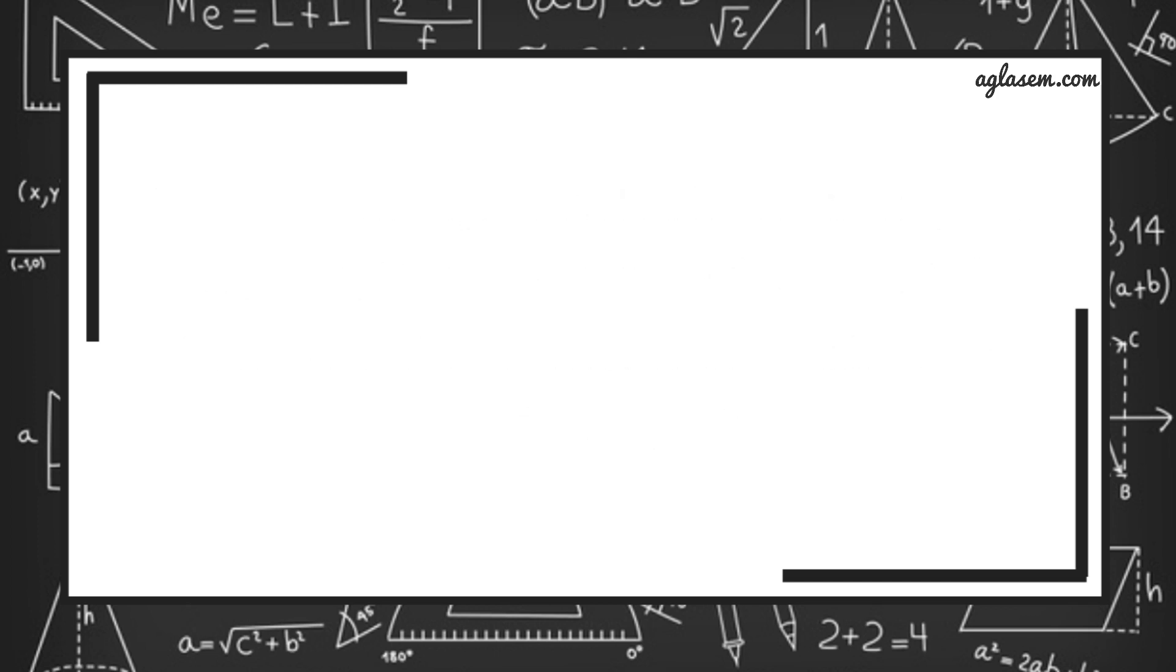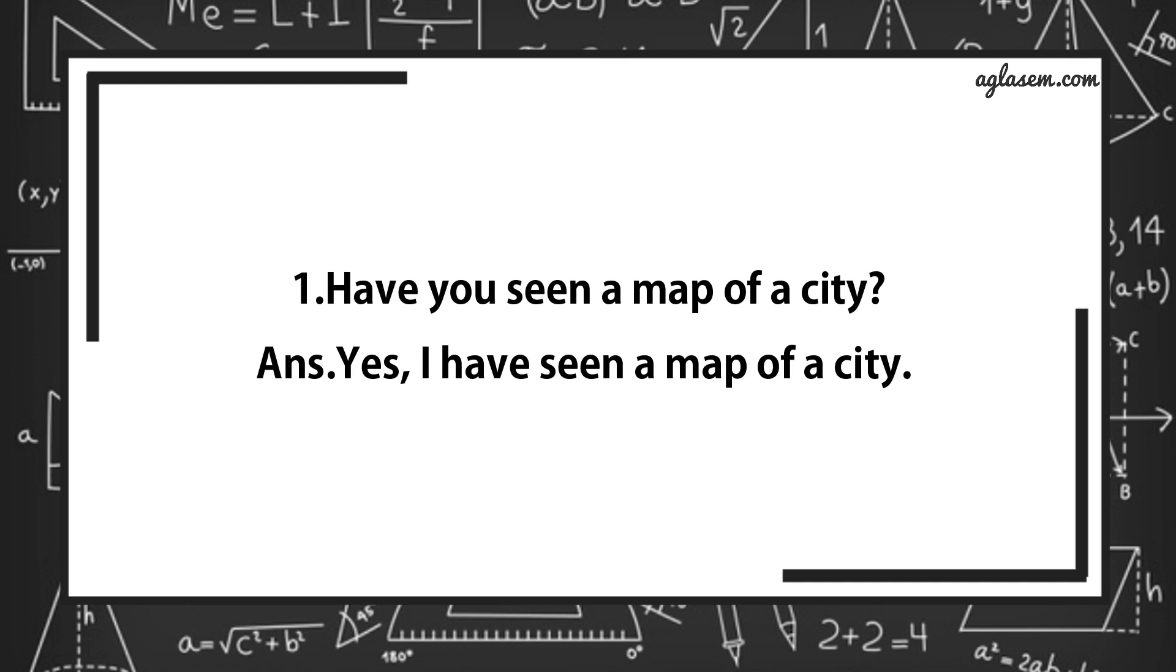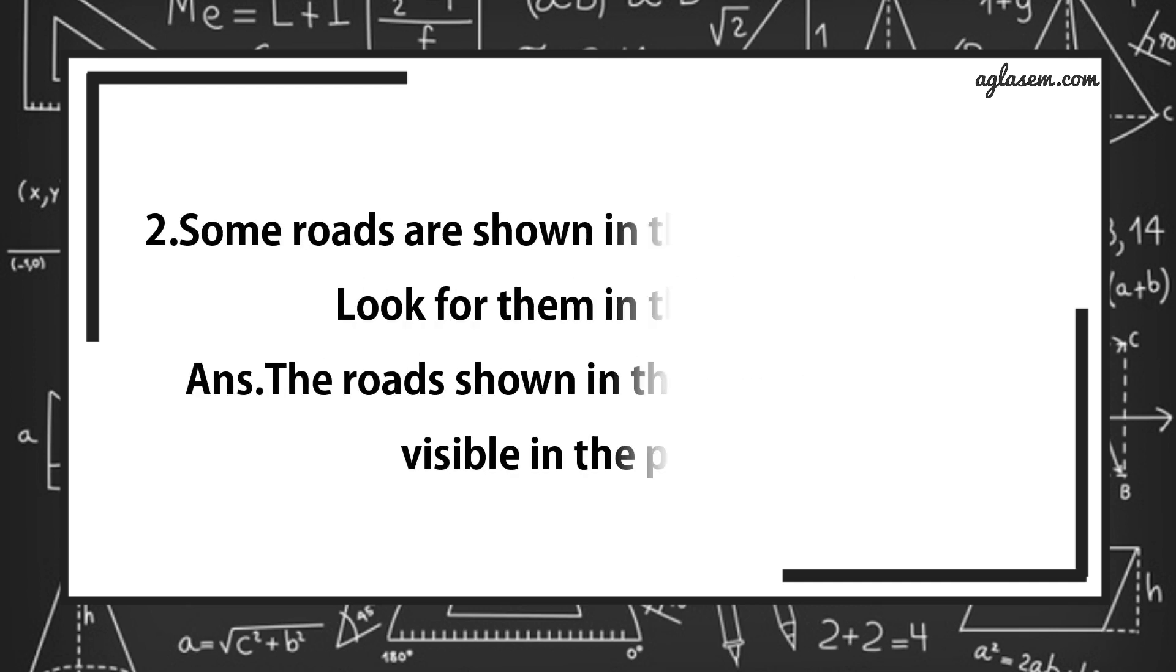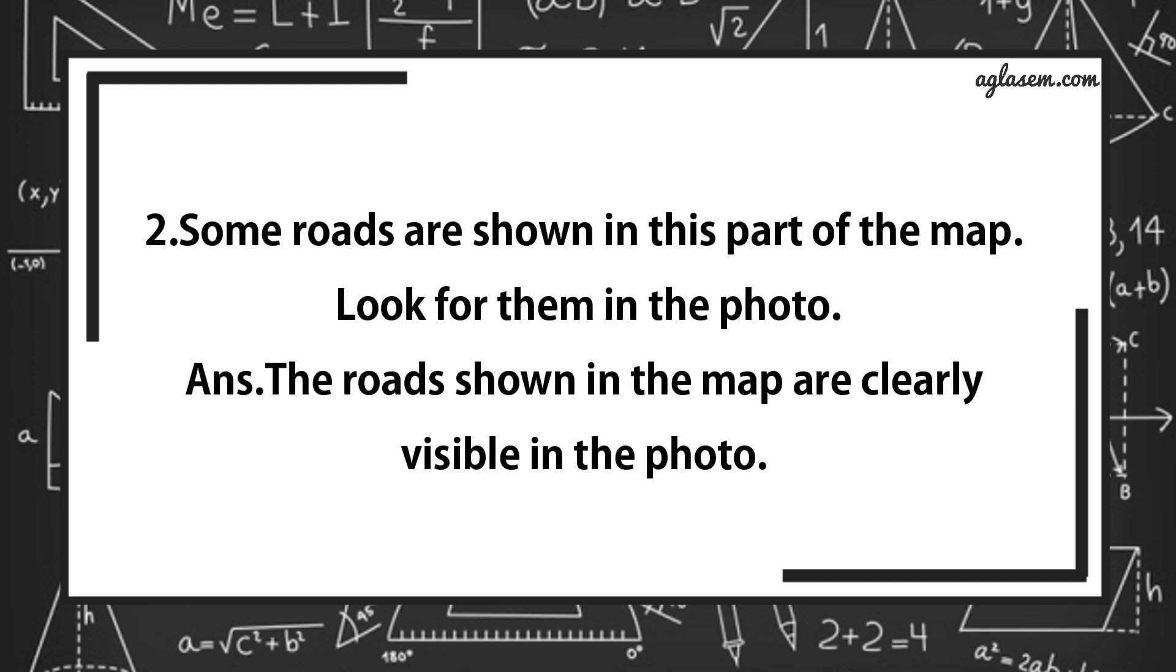Question number 1 says, have you seen a map of a city? Answer is, yes, I have seen a map of a city. Question number 2 says, some roads are shown in this part of map. Look for them in the photo. Answer is, the roads shown in the map are clearly visible in the photo.